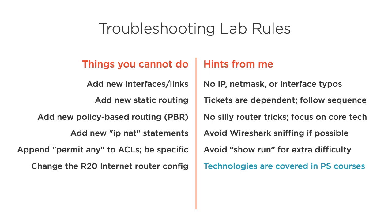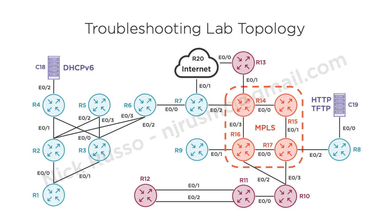I want to reinforce that everything in this lab is covered in my 7 Pluralsight courses, so be sure to reference those if you get stuck. Here's the lab topology. I'm not going to overcomplicate this diagram by adding in all the routing protocol boundaries, IP addresses, and other features. The information you see here is enough to take the configuration I give you and turn it into a lab topology in your own environment.